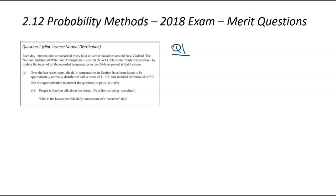Each day the temperatures are recorded, so remember that from the previous one. They've got the mean temperature in a 24-hour period. Part A, over the last seven years in Reefton, it had a mean of 11.6 and a standard deviation of 4.8. People in Reefton talk about the hottest 1% of days being scorches. What is the lowest possible temperature for one of these scorched days? This is an inverse probability question because that 1%, you've been given the probability, which means you've got to work backwards to find out one of the other variables. In this case, the temperature or the x value.